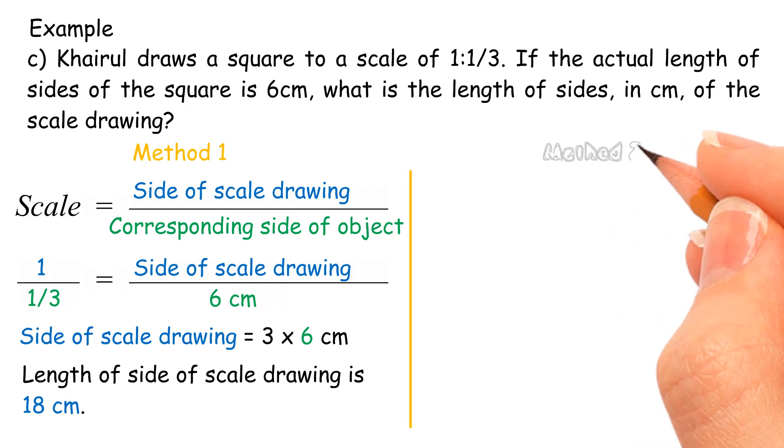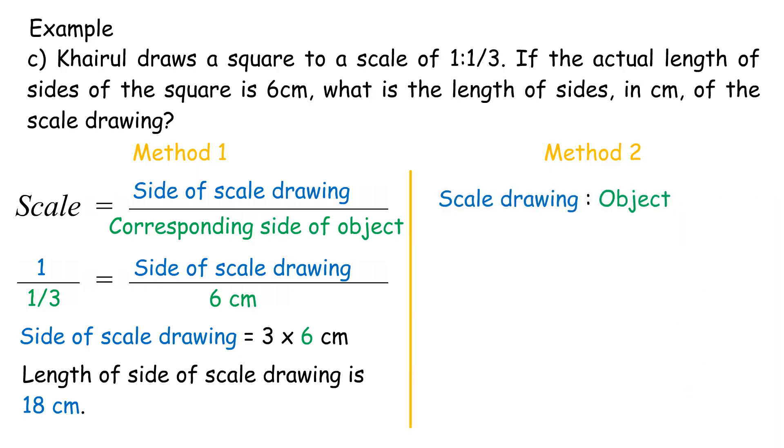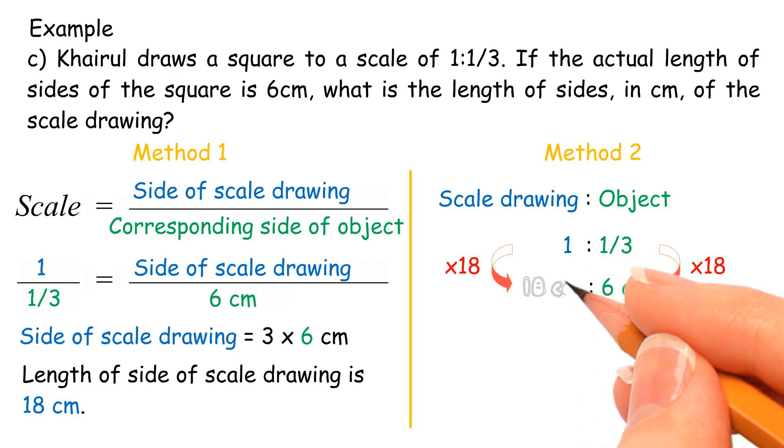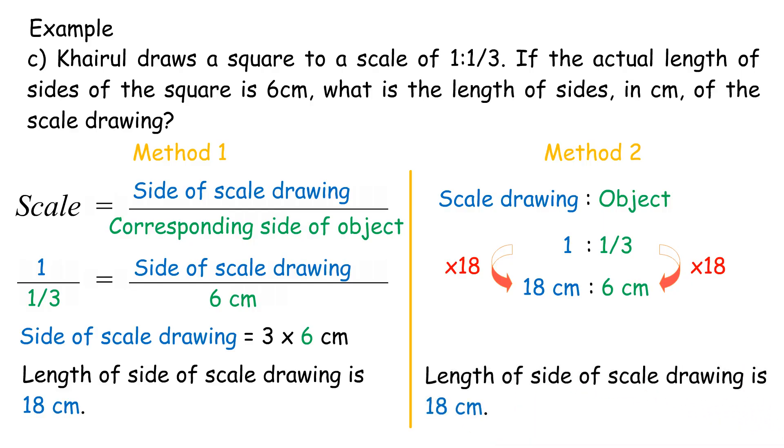Method 2, scale drawing is to object: 1 is to 1 third. Due to the actual length of sides of the square is 6 cm, so 1 third needs to times 18 to become 6 cm. If times 18 on the right side, need to times 18 on the left side also. Therefore, the length of side of scale drawing equals 18 cm.